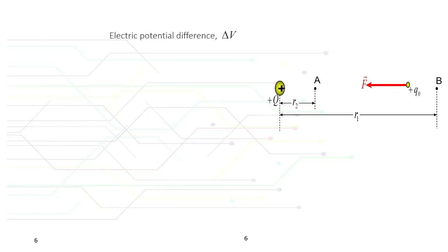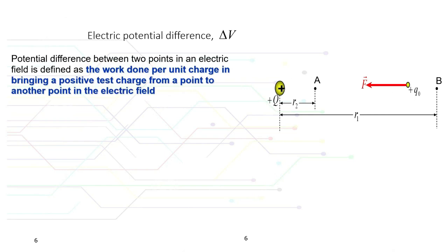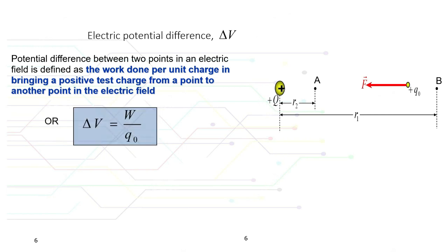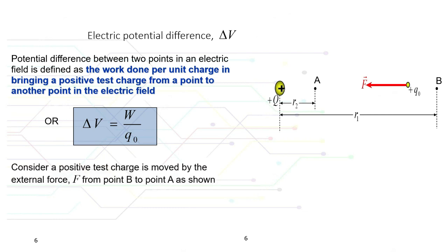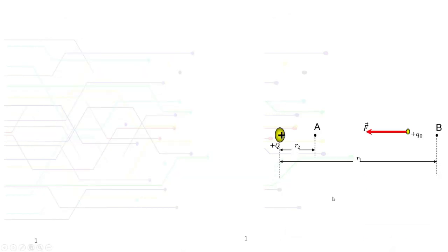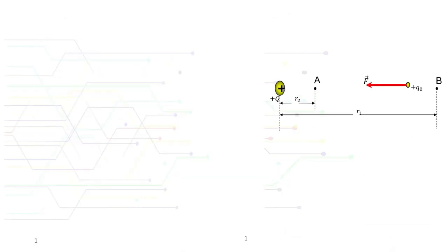Now let's look at electric potential difference, ΔV. Potential difference is also referred to as voltage. The potential difference between two points in an electric field is defined as the work done per unit charge in bringing a positive test charge from one point to another point in the electric field.